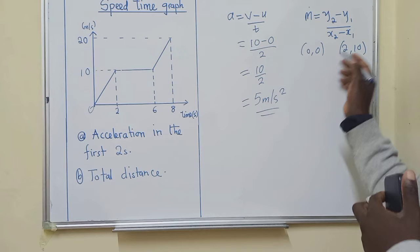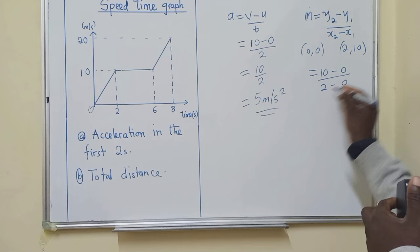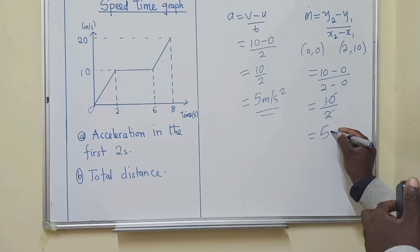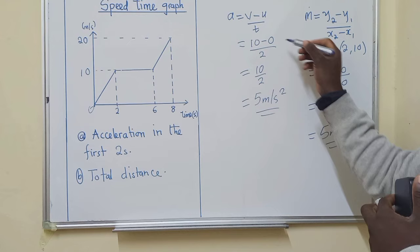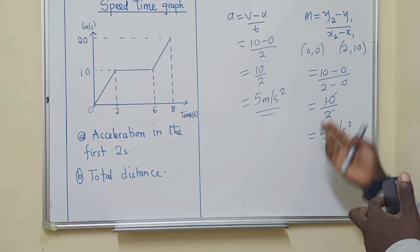So now you plug them in. So I've 10 minus 0 over 2 minus 0. So if you don't know how to find a gradient or how to use this formula right here, just stick to this one. It will be much easier for you. So I've answered question A either by this method or this method.